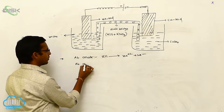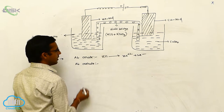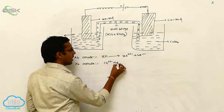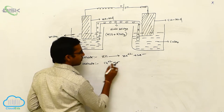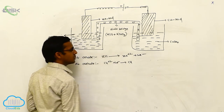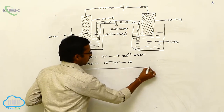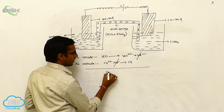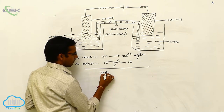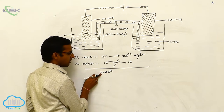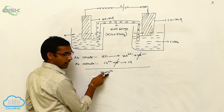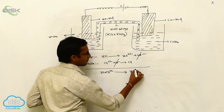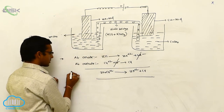At the cathode, the reduction process takes place. Those two electrons are gained by copper — Cu²⁺ gains two electrons and is converted to Cu. The two electrons cancel out, giving us Zn plus Cu²⁺ on the left equals Zn²⁺ plus Cu on the right. This is your net reaction.